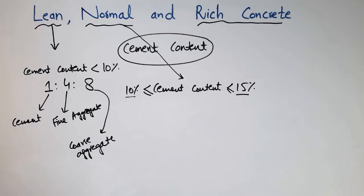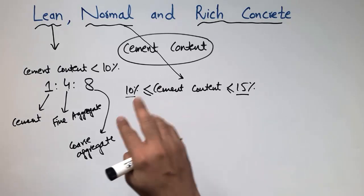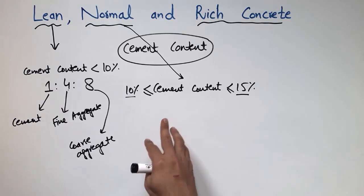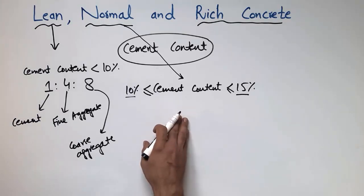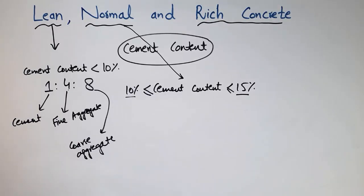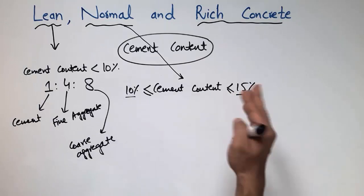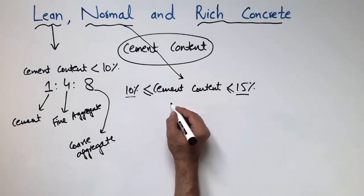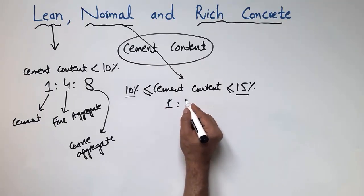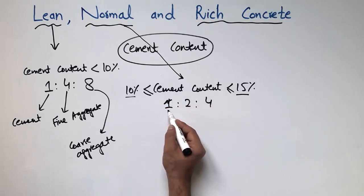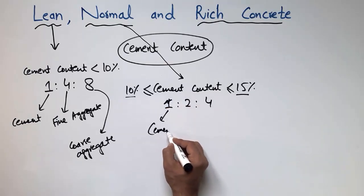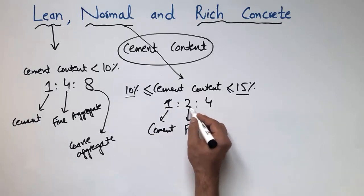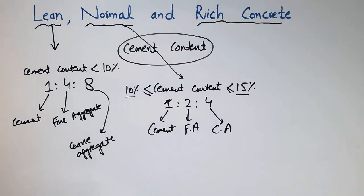Normal concrete is used in residential buildings or low-story buildings where we don't have high mega structures or multi-story buildings. We don't provide much cement content, so we don't use this concrete in high-rise buildings like 50-story or 60-story buildings. The general ratio for this concrete is 1:2:4, where 1 is the cement, 2 is the fine aggregate (sand), and 4 is the coarse aggregate.